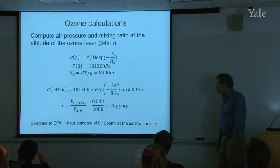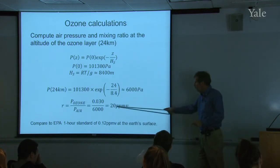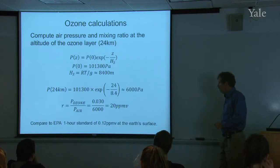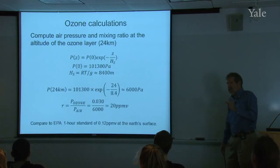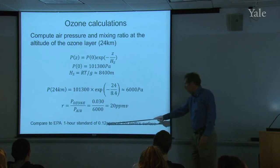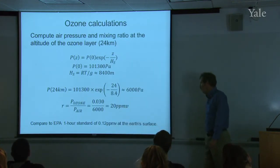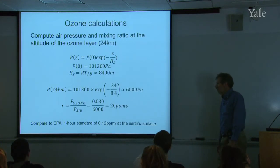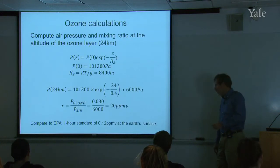That's a pretty straightforward calculation — find how much air is there, form the proper ratio, and get it in the proper units. Compare this with what we were talking about last time: the EPA one-hour standard for ozone in the boundary layer where we live was 0.12 ppmv. So the ozone concentration in the ozone layer is about 200 times the EPA one-hour limit — just to give you a relative sense for that.